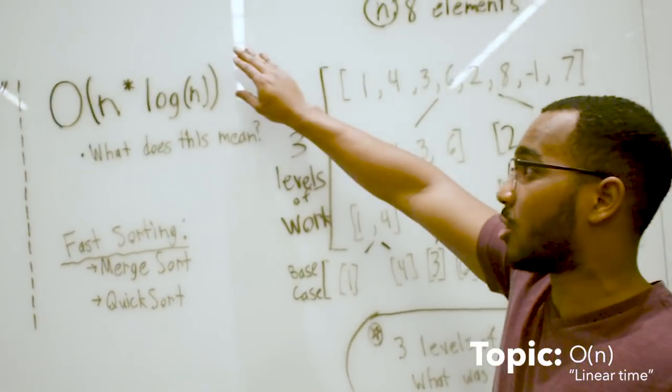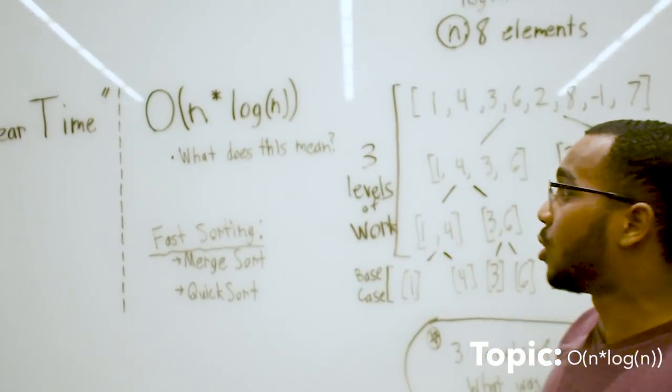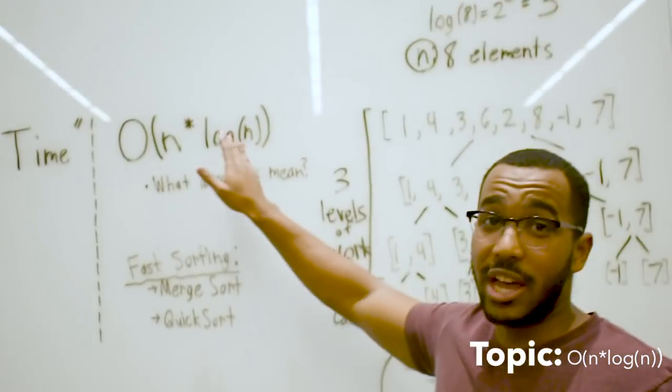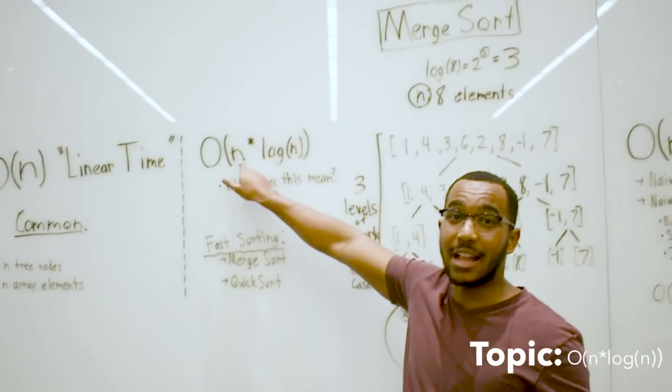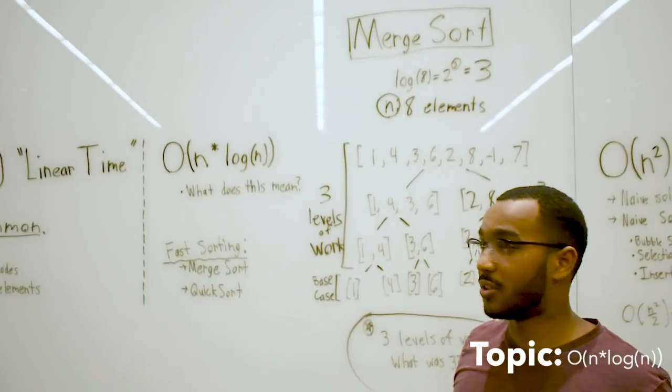Then we get into n log n. This is one of the more confusing complexities. What is this saying? It could be saying a lot of things. It could be saying we're doing log n work for each of the n elements we have. This is what multiplication does.